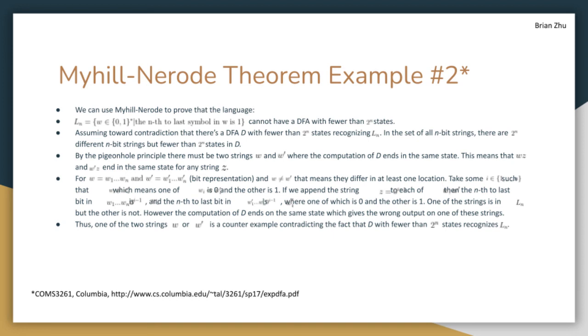However, that means that one of the strings is in L, but the other is not. However, given our previous assumption about D and the pigeonhole principle, this means that the computation of D ends on the same state for both strings, which gives the wrong output for one of the strings.